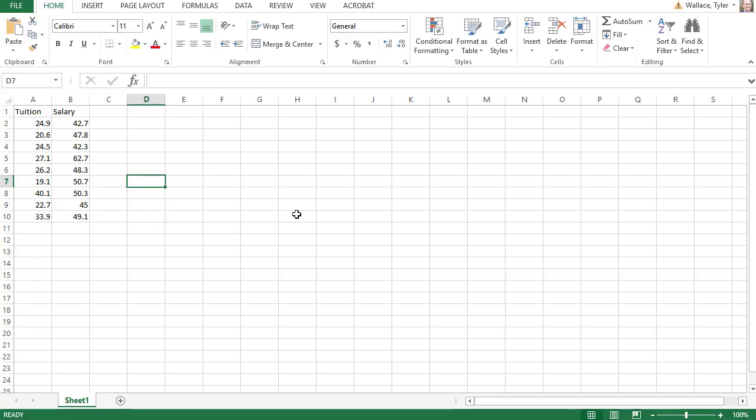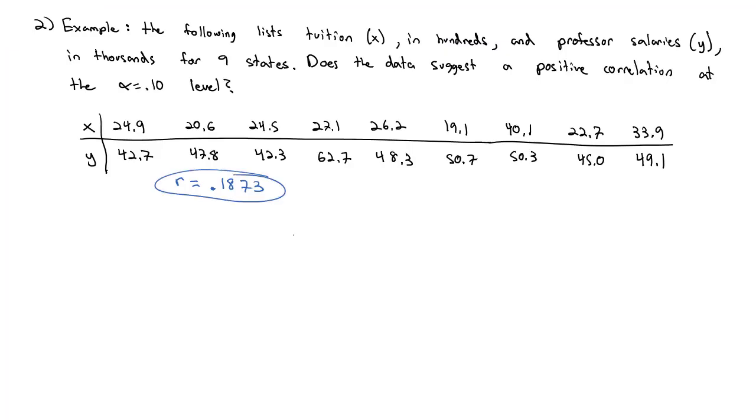I've copied the data here into Excel and we're going to quickly calculate r, the correlation coefficient, by equals correlate, open a parentheses, select the data for array 1, comma, select the data for array 2, close the parentheses, and when I hit enter, I find out r is equal to 0.1873. So I'll add that r of 0.1873 to our data and then we'll run through the six steps of our hypothesis test.